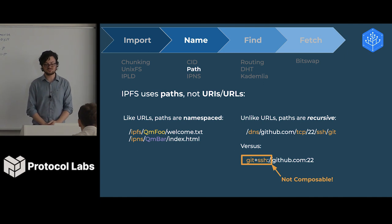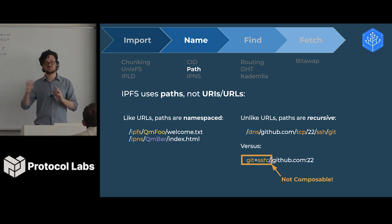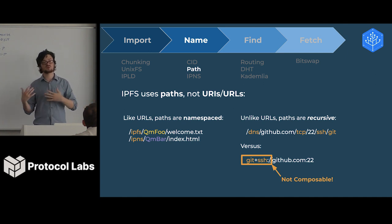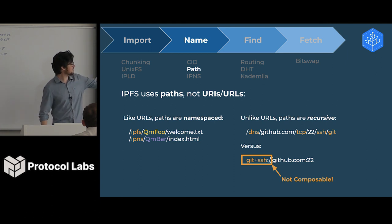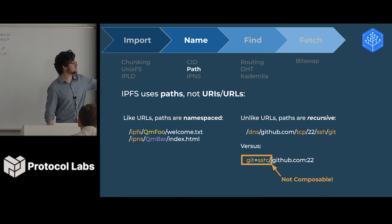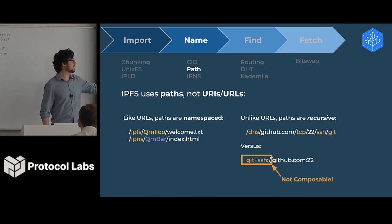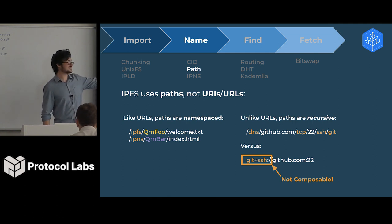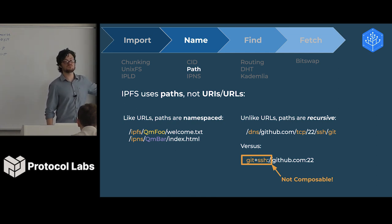Paths. You may have noticed that we use paths, not URLs. Most projects would use something like colon slash slash. We don't do that because, like URLs, paths are namespaced, but unlike URLs, paths are recursive. You'll notice that on the right-hand side we have slash dns slash github.com slash gcp slash port number slash ssh slash git — this is a way to describe a git URL for decentralized content. The second version shows how you'd normally describe this using a URL, where you have to say 'git+ssh' because you can't compose multiple protocols. Paths let us actually compose the protocols.